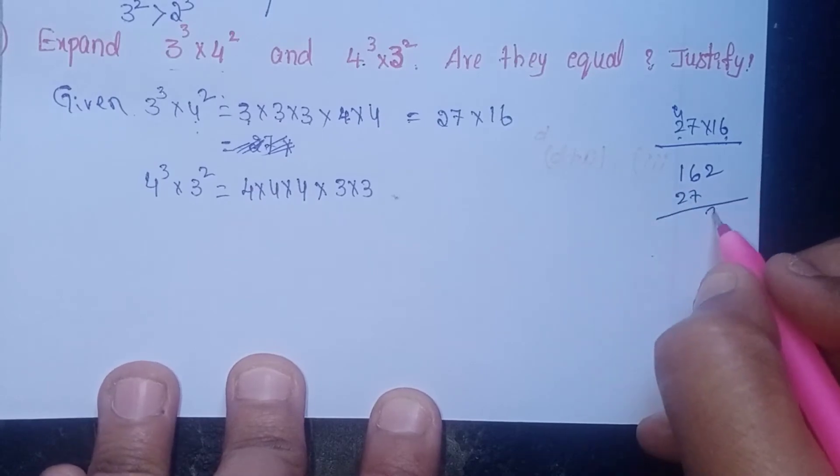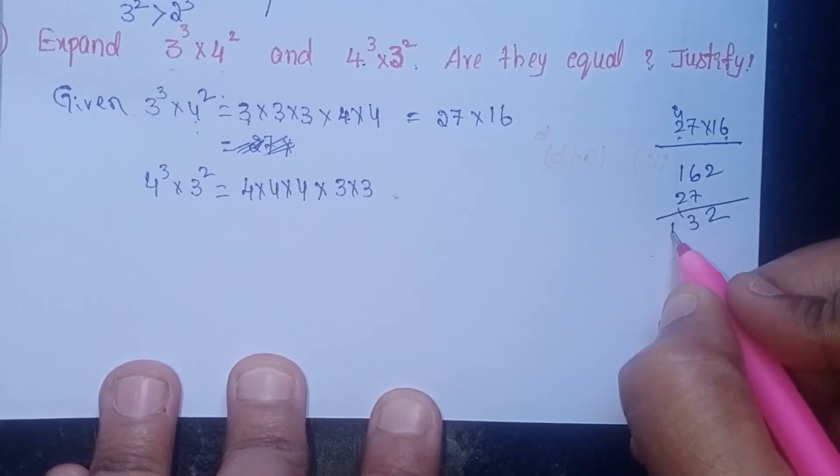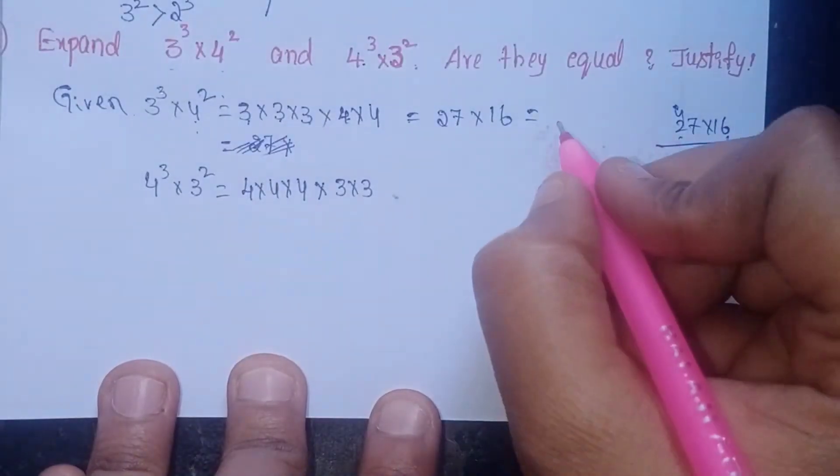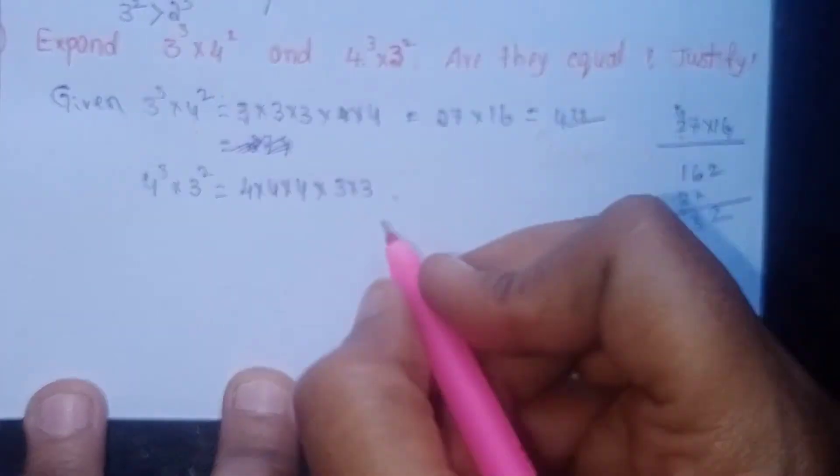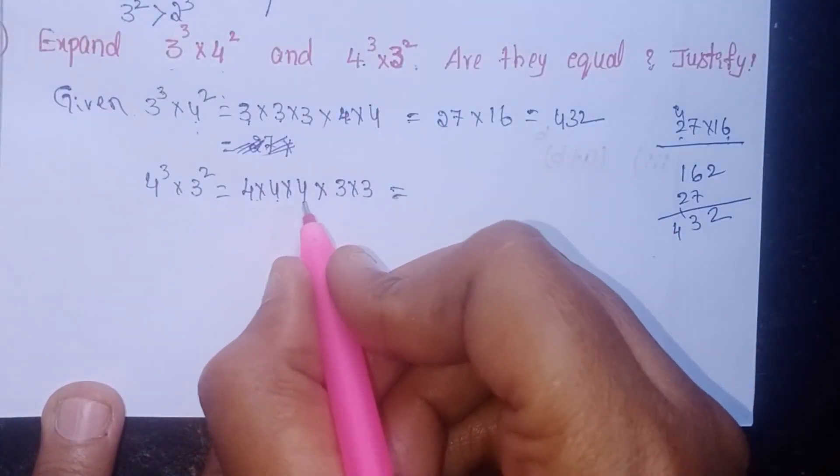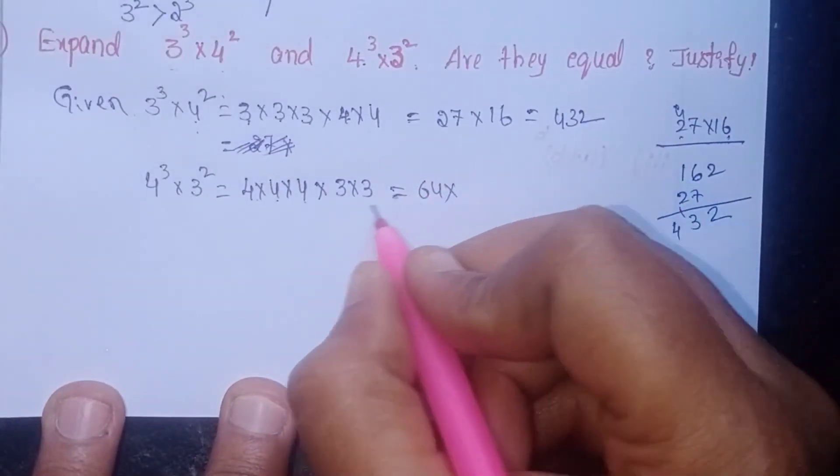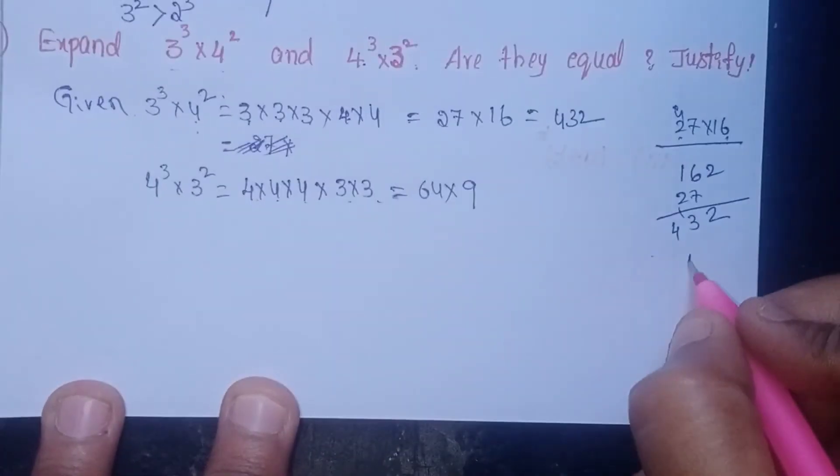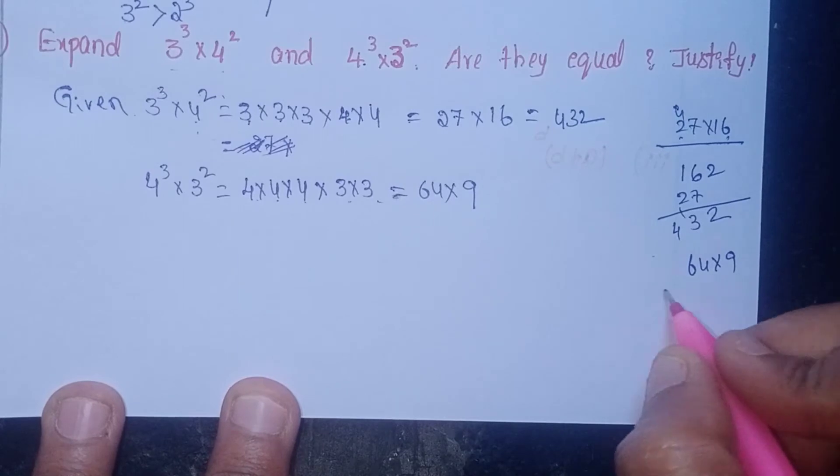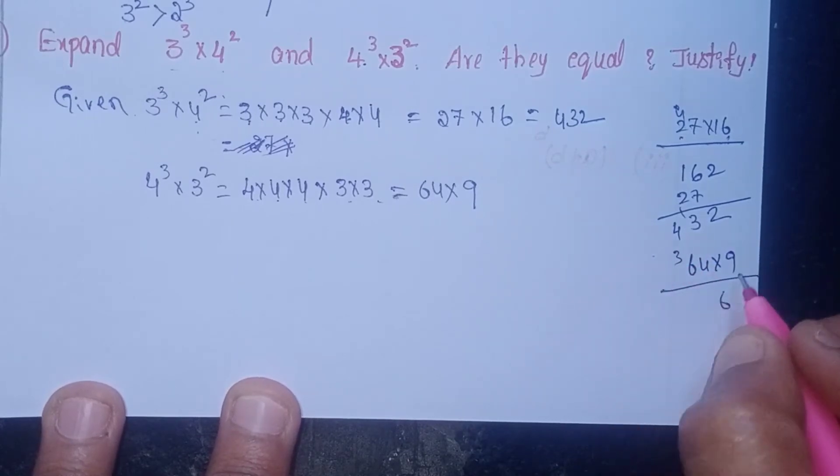This value is 432. And this value: 4×4 is 16, 16×4 is 64, into 3×3 which is 9. 64×9: 9×4 is 36, 9×6 is 54, so this value is 576.